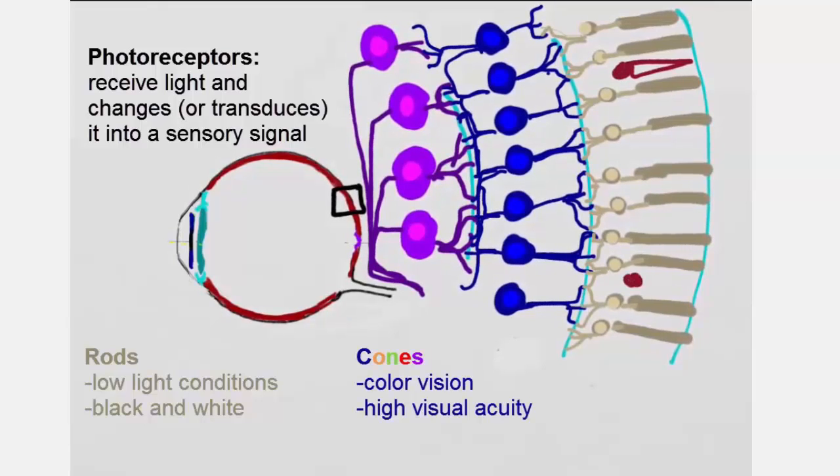Cones come in a couple of different varieties because they're color vision, and so they come in the colors that they respond to. They're also responsible for all of our high visual acuity vision.